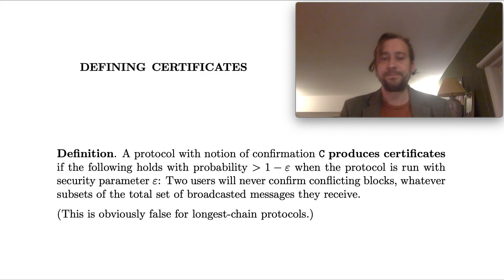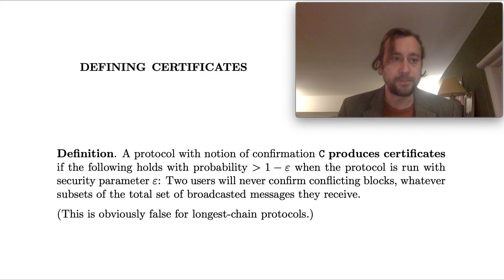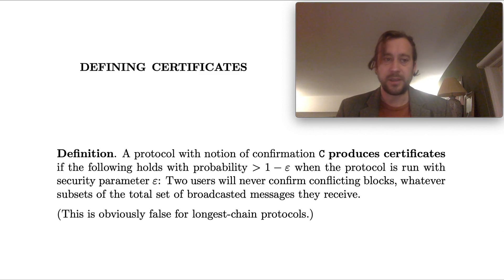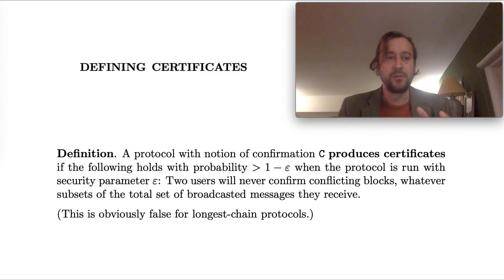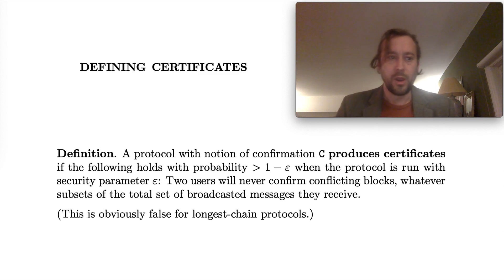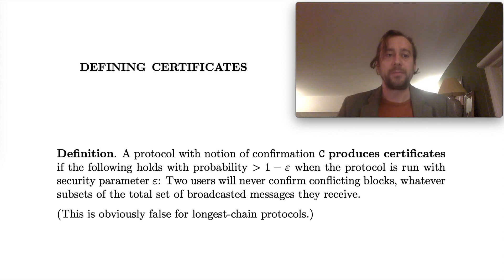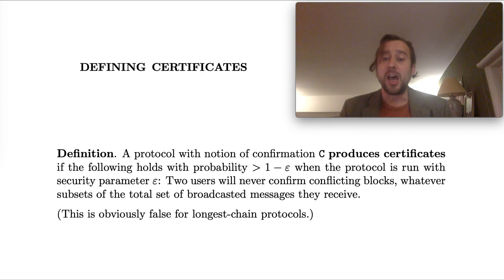Here's the actual definition: we say a protocol with notion of confirmation C produces certificates if the following holds with probability greater than 1 minus epsilon when the protocol is run with security parameter epsilon — two users will never confirm conflicting blocks, whatever subsets of the total set of broadcasted messages they receive. The definition says that from amongst all the broadcast messages, you can't pull out two sets of messages that make incompatible blocks look confirmed. So the basic idea is that if a protocol produces certificates, then subjective certificates constitute proof of confirmation. Algorand is an example of such a protocol — it's designed so that it's unlikely two incompatible blocks would ever be produced together with appropriate committee signatures verifying confirmation for each.